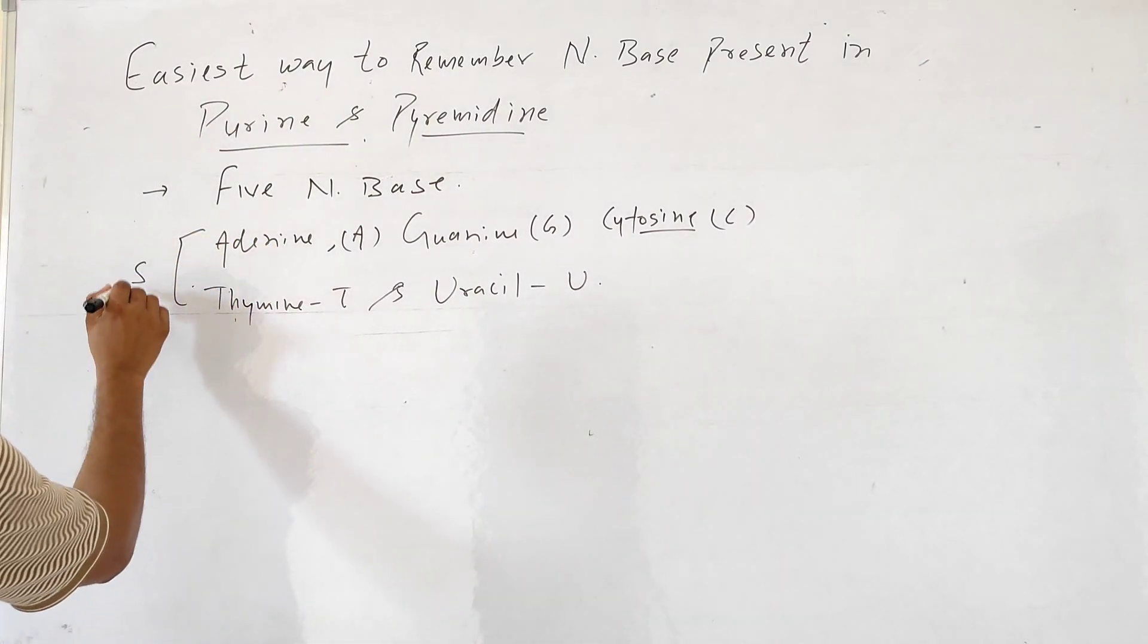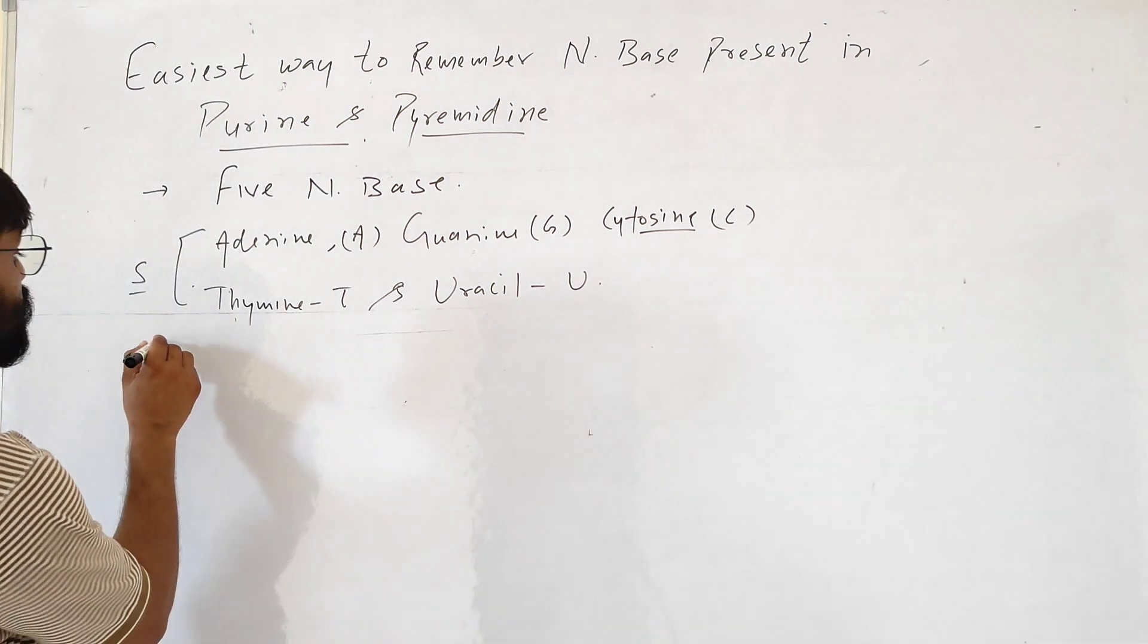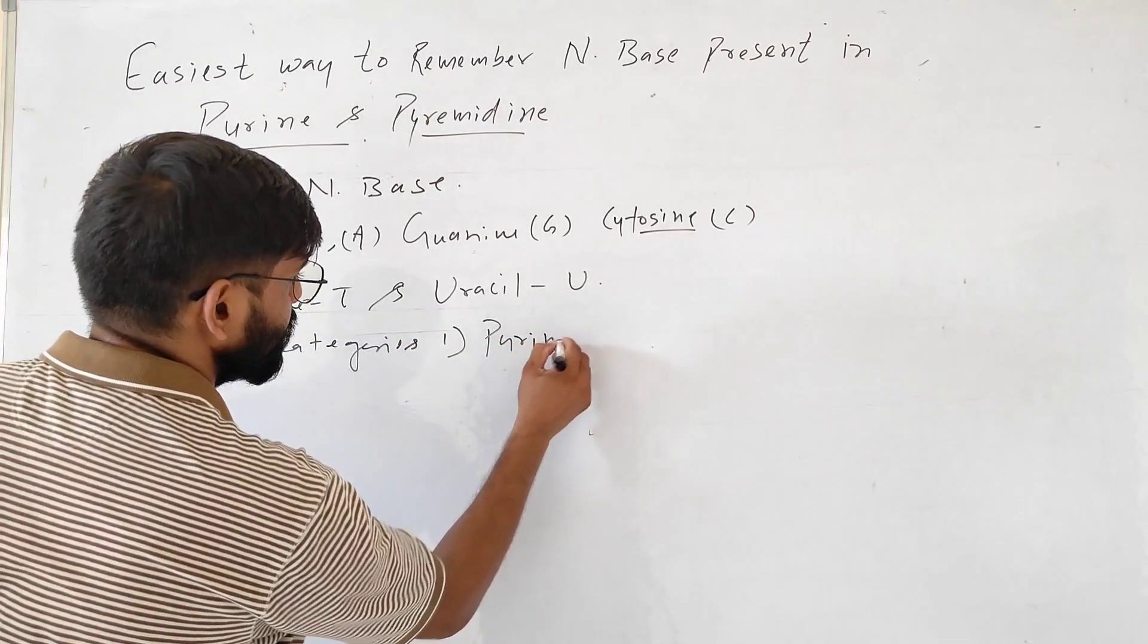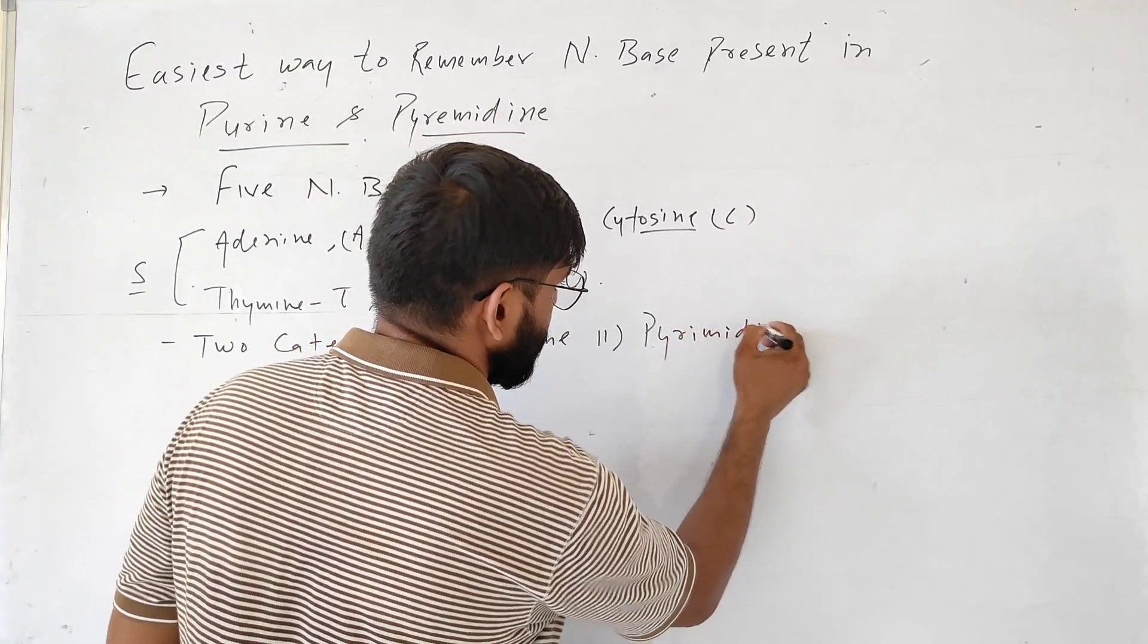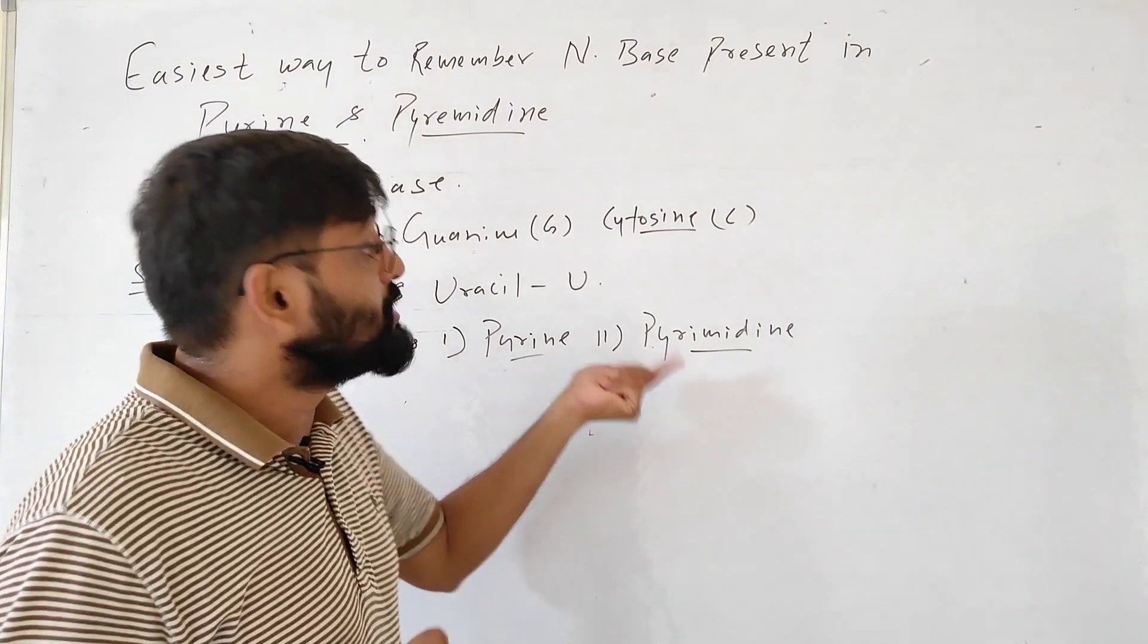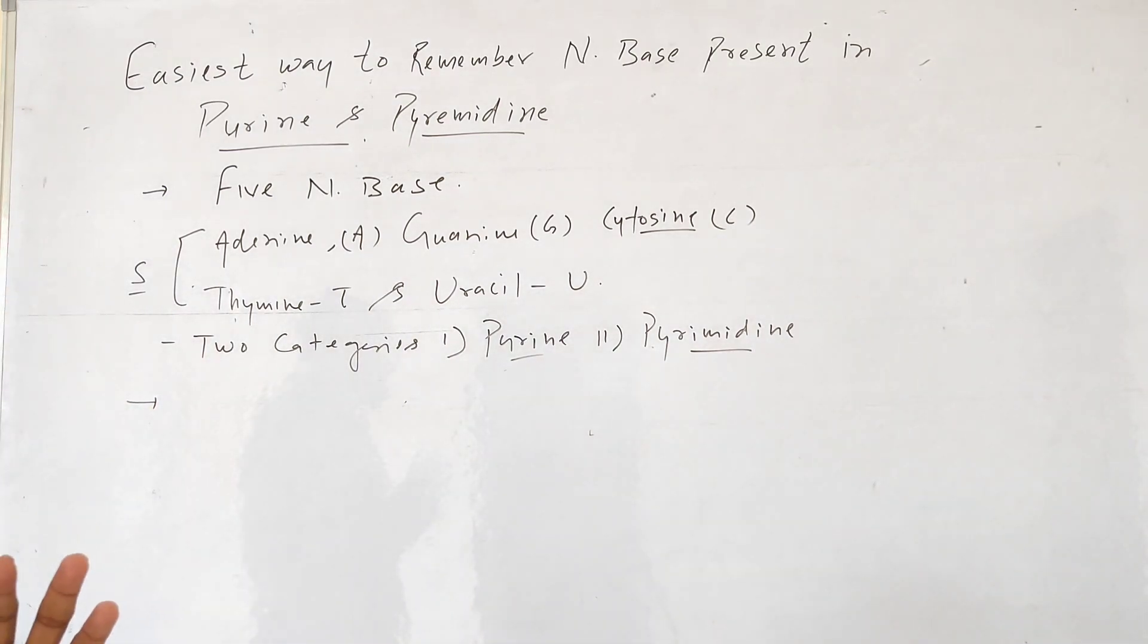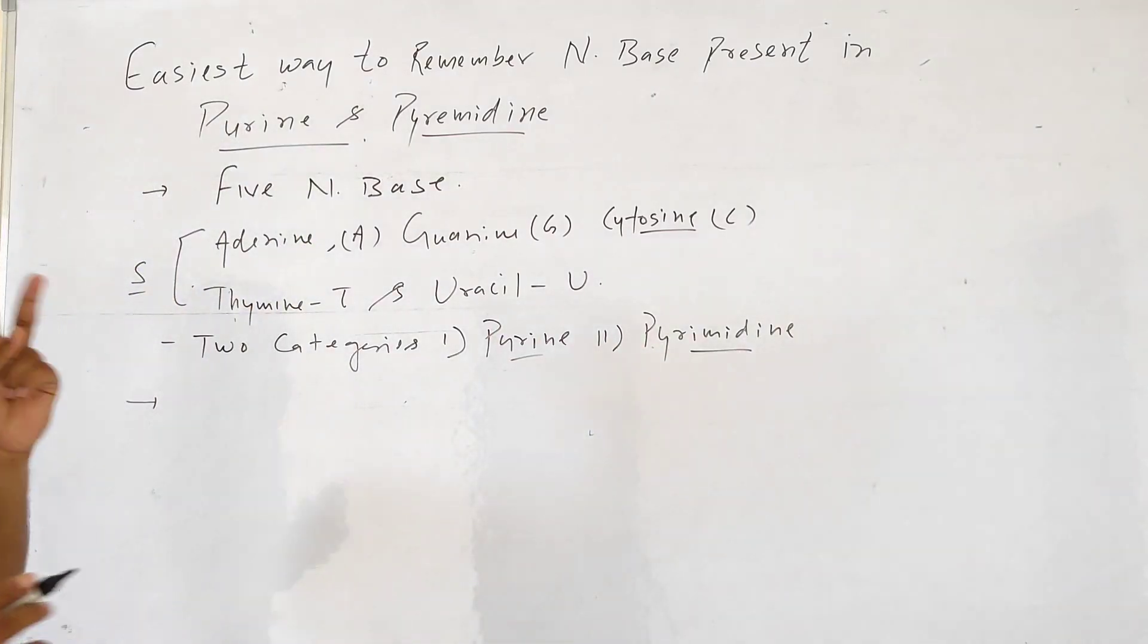These 5 nitrogenous bases are categorized into 2 categories: purine and pyrimidine. Sometimes we get confused which one is in purine and which is in pyrimidine. So I will tell you the easiest way to memorize which nitrogenous base is present in purine and which is present in pyrimidine. We will use 2 sentences.